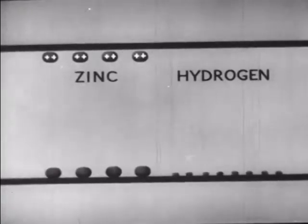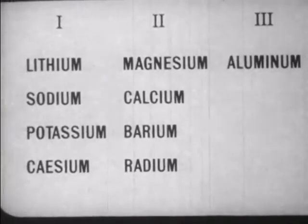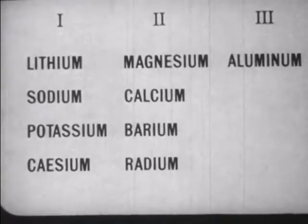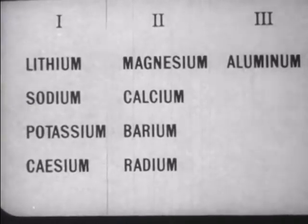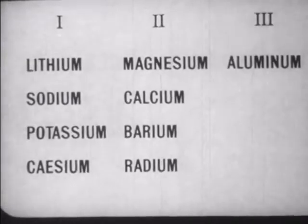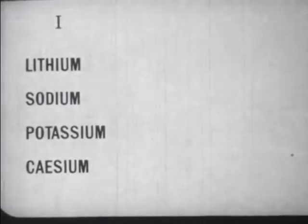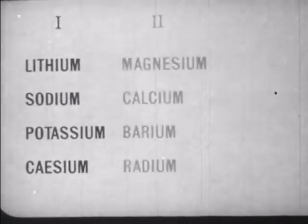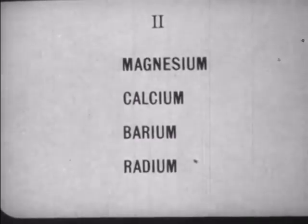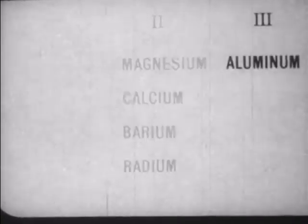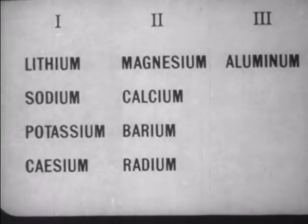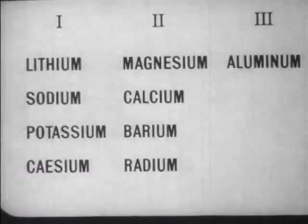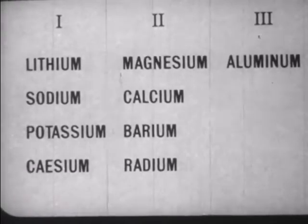Similarly, it has been found that atoms of all elements carry simple whole number multiples of the charge carried by hydrogen — some one unit charge, some two unit charges, and of the common elements only aluminum carries three. Thus, we see that electricity comes in very small packages or units, which are never subdivided.